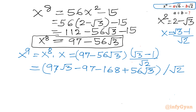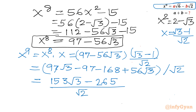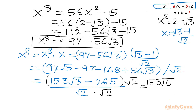Now 97 plus 56 — if I add both I will write 153 — root 3. And 168 minus 97 gives minus 265 in the denominator root 2. Now I will multiply the numerator and denominator by root 2. So root 2 times root 2 in the denominator. This gives us 153 root 6 (since root 3 times root 2 is root 6), minus 265 root 2, and the denominator is 2.